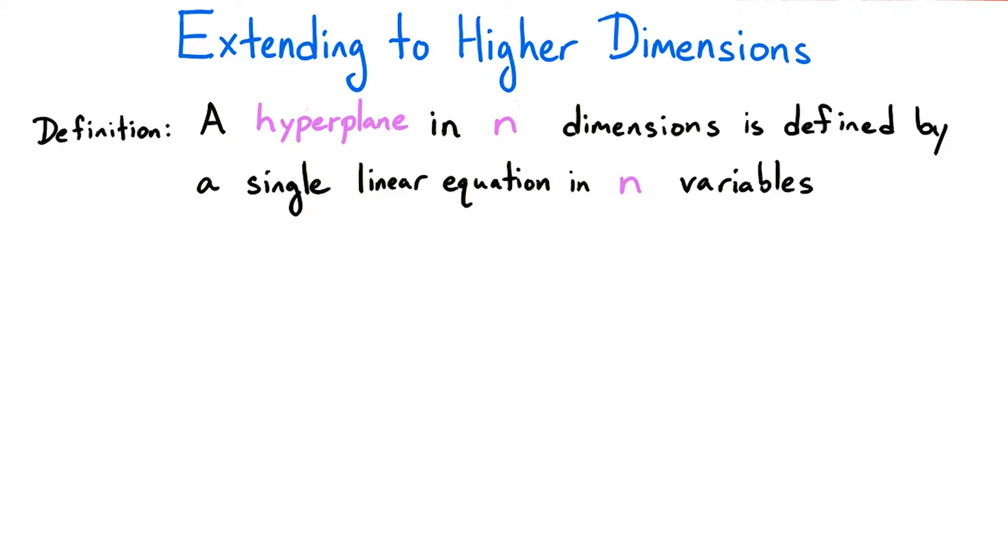The geometry of higher dimensional objects, even though we can't visualize them in three dimensional space, is analogous to the geometry we've studied so far. As with lines and planes, a hyperplane in n dimensions is an n minus one dimensional object.